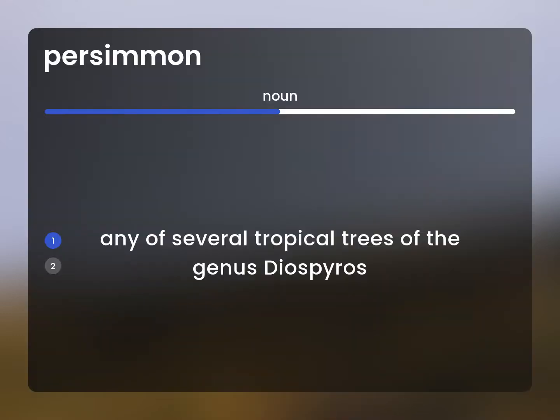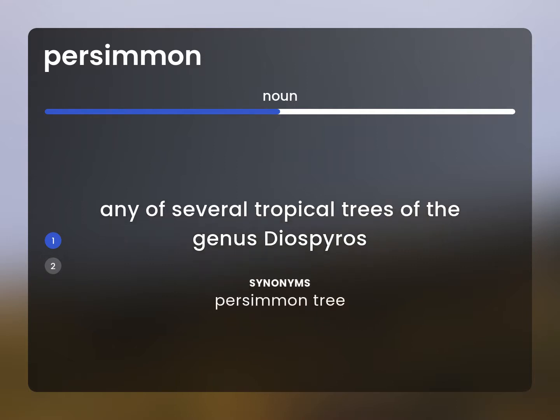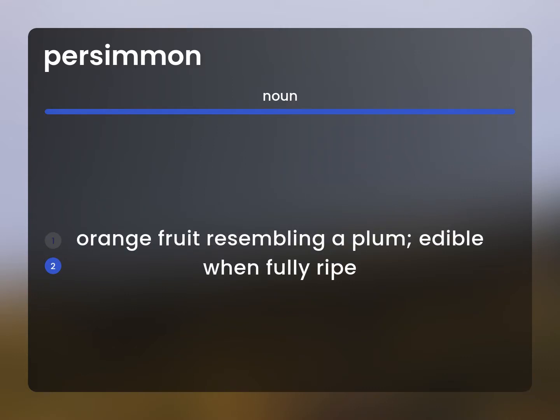Any of several tropical trees of the genus Diaspirus. Persimmon tree. Orange fruit resembling a plum. Edible when fully ripe.